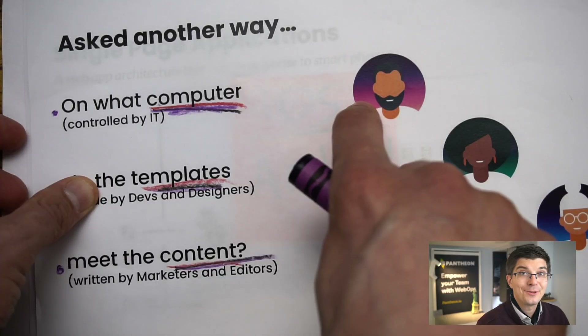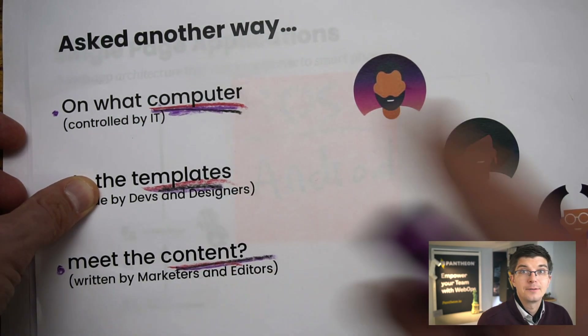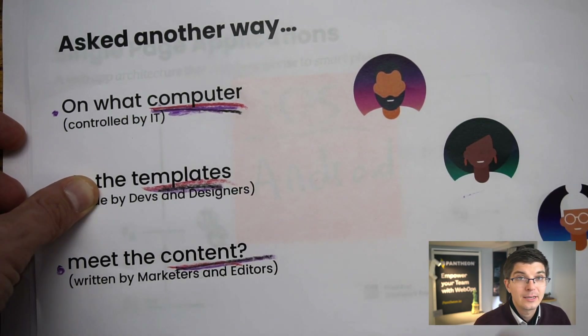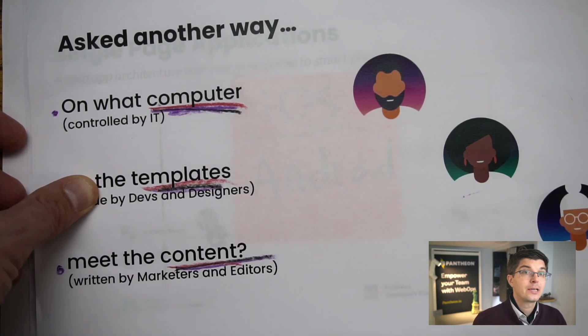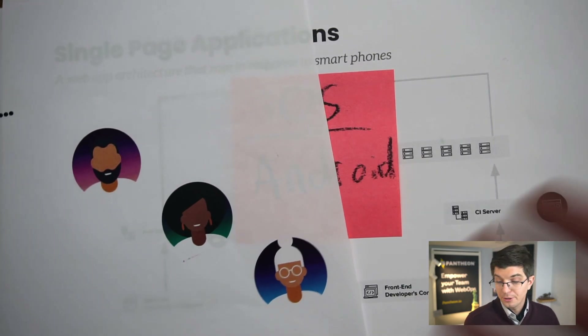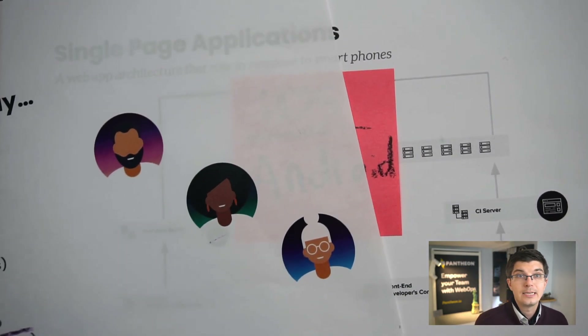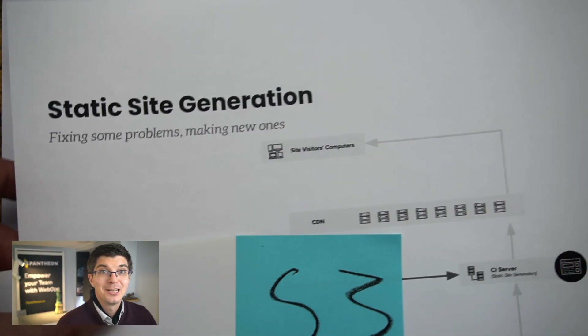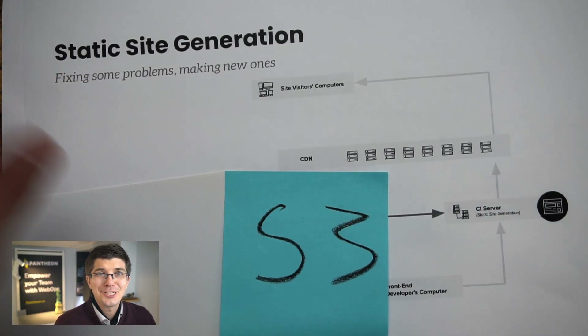Let's bring back our web team. Client-side rendering, single-page applications — not so great for the IT leaders that have to manage the cost and complexity there. They want stability, cost-effectiveness, and security. And they're looking at the front half of this architecture, and they're liking some of what they see over here. They see flat files uploaded to something perhaps as cheap, as secure, as simple as an S3 bucket. Could the whole website just be that?